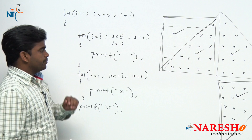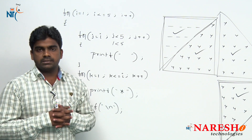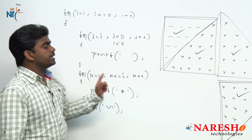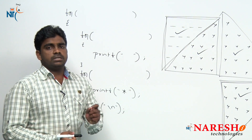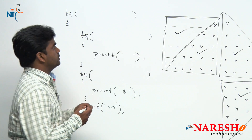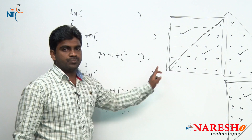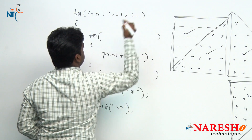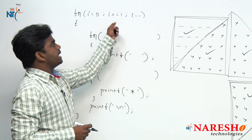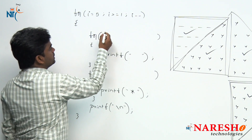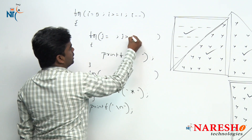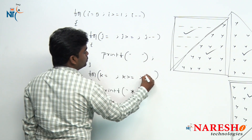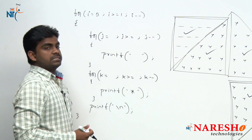Now, I want to write the same logic using decrement operators. Here I am using increment operators: i plus plus, J plus plus, and K plus plus. Now I want to use decrement operators. How to write the logic? For the outer loop: how many rows? 5 rows. i value starts with 5, i is greater than or equals to 1, i minus minus.